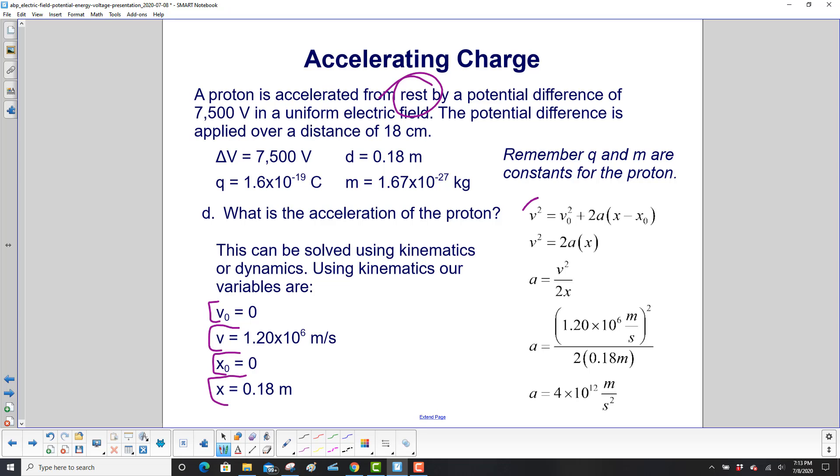There's no time here, so third kinematics equation comes in. This is zero. This is zero. We have 2a delta x. Acceleration, then, divide both sides by 2x. And we get the acceleration as v squared over 2x.